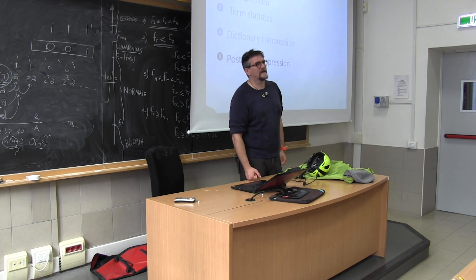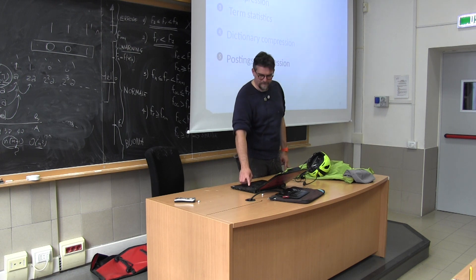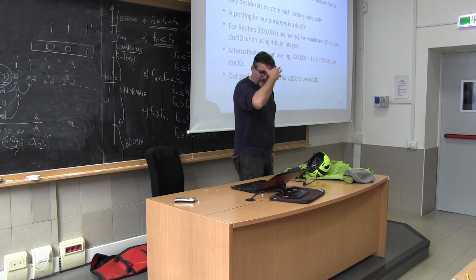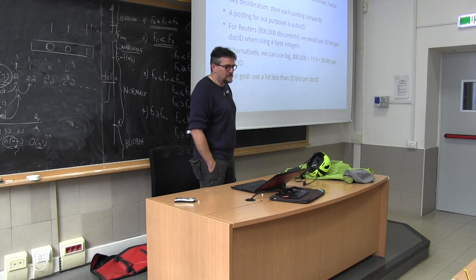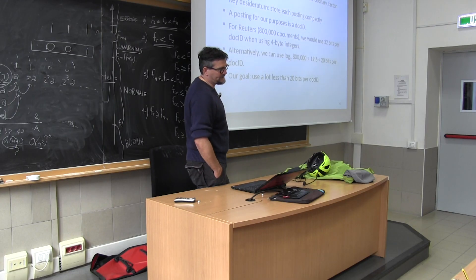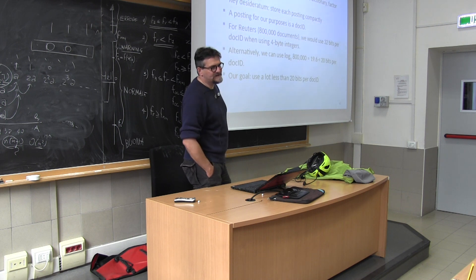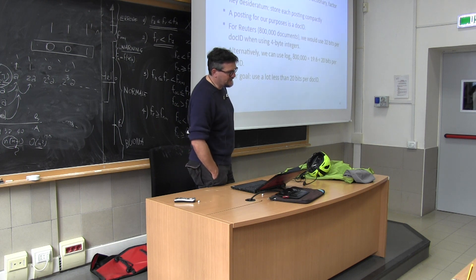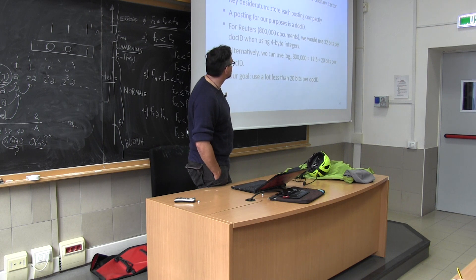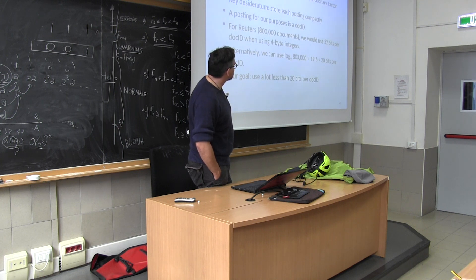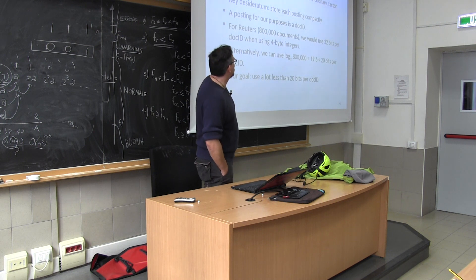The posting list is much larger than the dictionary — about 10 times the size. For a posting stored as a doc ID with 800,000 documents, we would use 32 bits. Instead of writing doc IDs, if we consider variable width and a single-bit bound, our upper bound is 20 bits. The goal is to use less than 20 bits where possible.